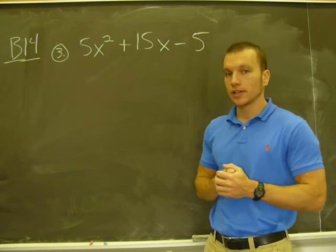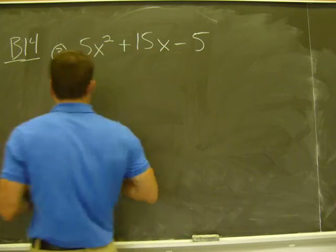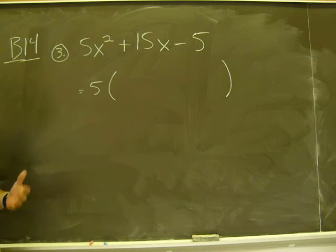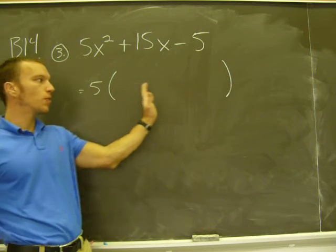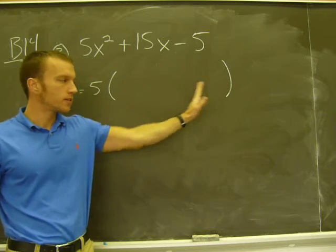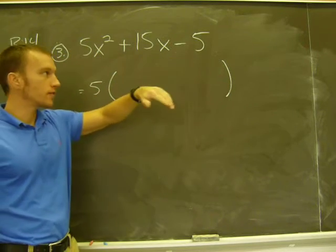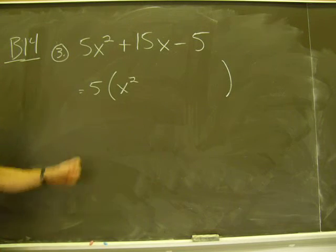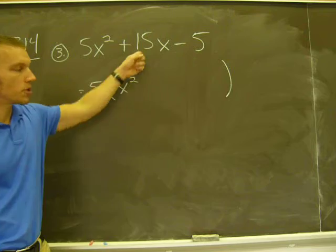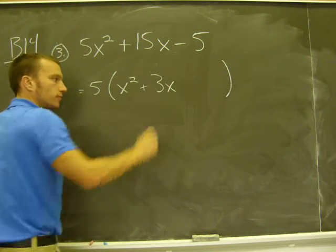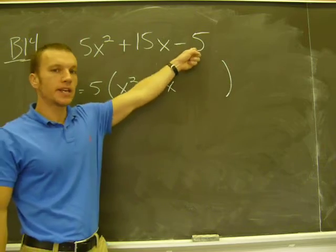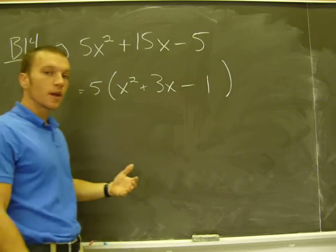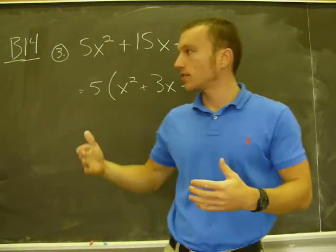So the greatest common factor is 5. I factored out the 5, and it's going to be 5 times what — using parentheses to indicate multiplication — would give me that. 5 times what gives you 5x squared? x squared. 5 times what gives you the plus 15x? Plus 3x. 5 times what gives me negative 5? It would have to be negative 1.